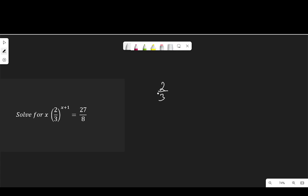2 over 3 to the power of x plus 1 is equal to 27 over 8. I'm going to express the fraction on my right hand side in this form because I know that 27 is 3 to the power of 3, and 8 is 2 to the power of 3.